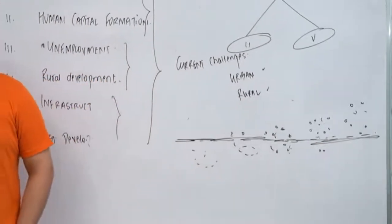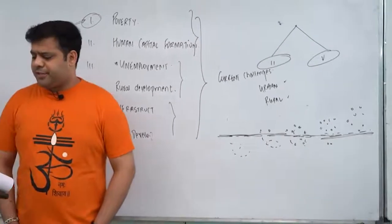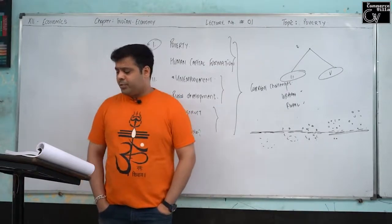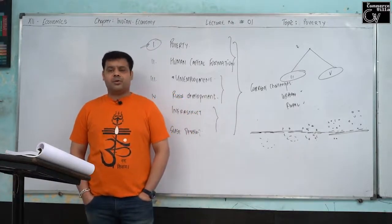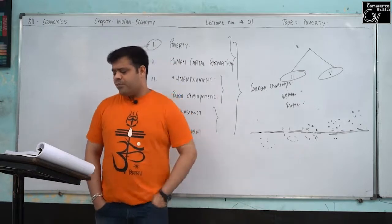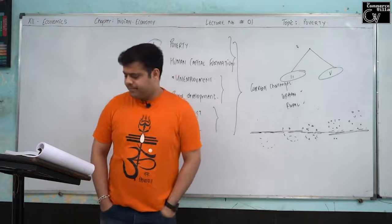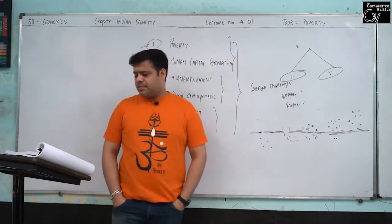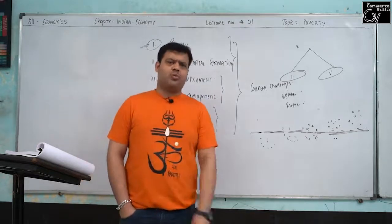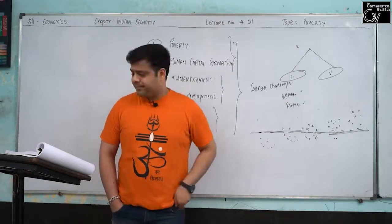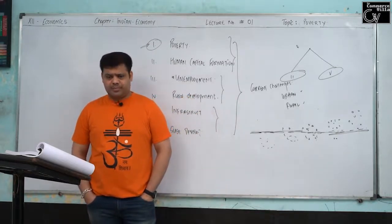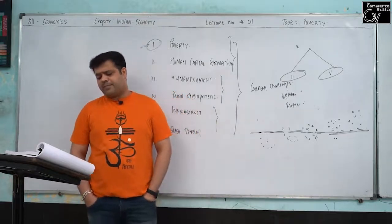Definitions: always poor — people who do not usually have sufficient money to fulfill basic needs and remain below the poverty line. Usually poor — poor most of the time but unable to fulfill basic needs; includes casual and landless workers. Churning poor — regularly move in and out of poverty like small farmers and seasonal workers. Occasionally poor — rich most of the time but sometimes face bad luck, like gamblers or those affected by lockdown. Non-poor/never poor — those who always live above the poverty line: doctors, lawyers, professionals. The poverty line refers to the cut-off point that divides people as poor and non-poor.